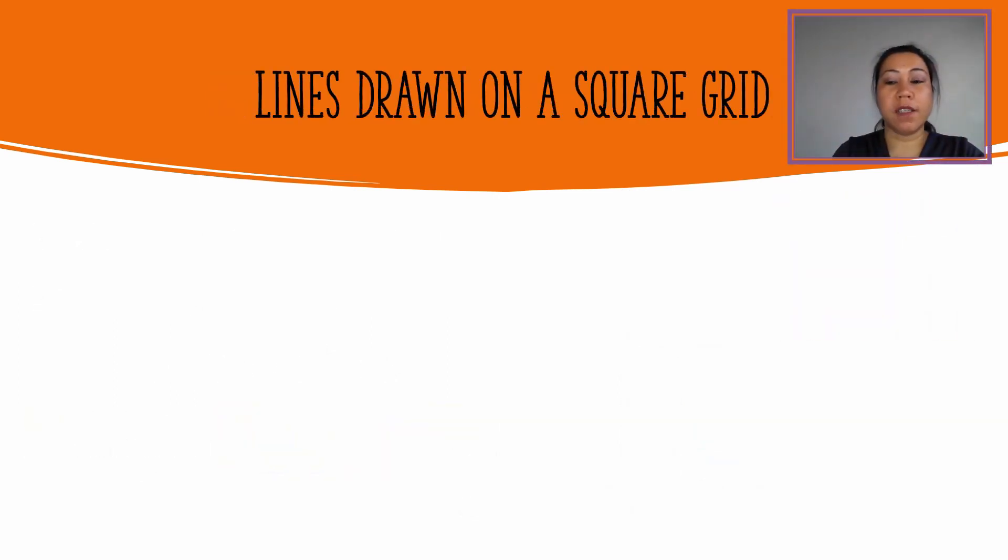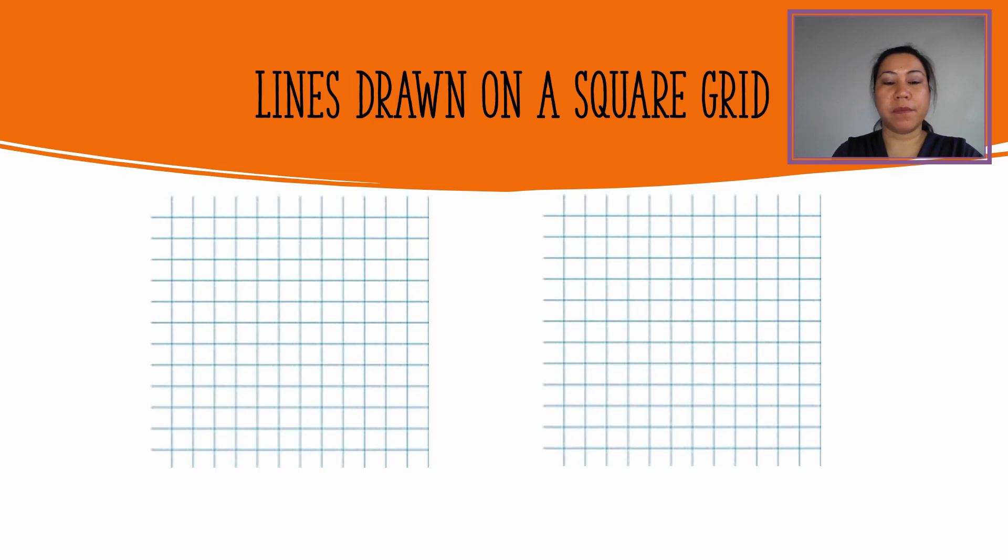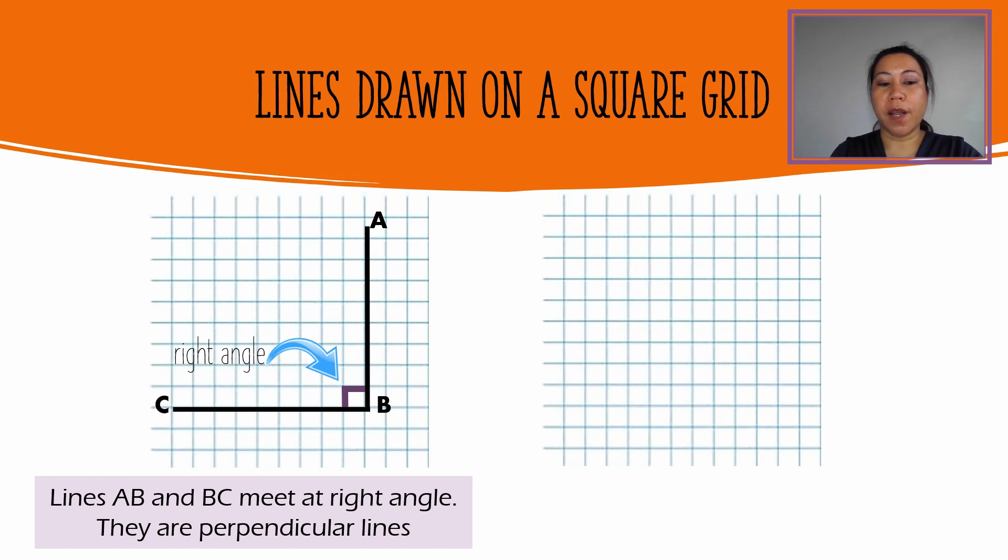Let's try to draw lines on a square grid like this. Lines AB and BC meet at the right angle. They are perpendicular lines.